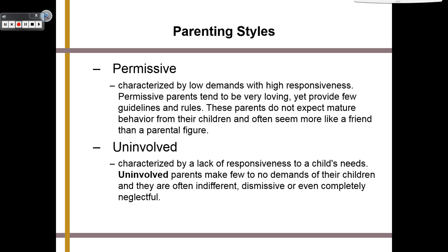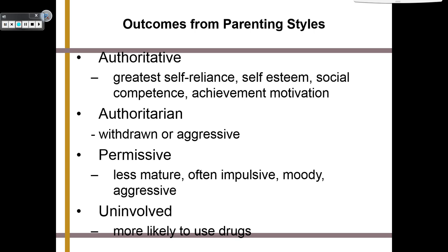Here are the outcomes of each parenting style. Authoritative parents tend to have children with the greatest self-reliance, best self-esteem, social competence, and achievement motivation. Children with authoritarian parents tend to become withdrawn or aggressive as adults. Children with permissive parents become less mature, are often impulsive, moody, and aggressive — they become brats, essentially. And children with uninvolved parents are the most likely to use drugs.